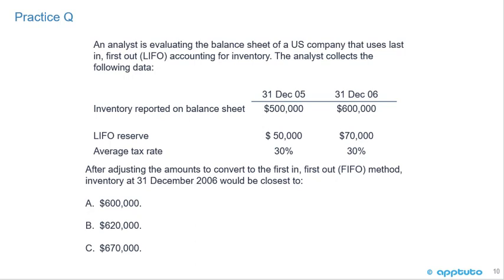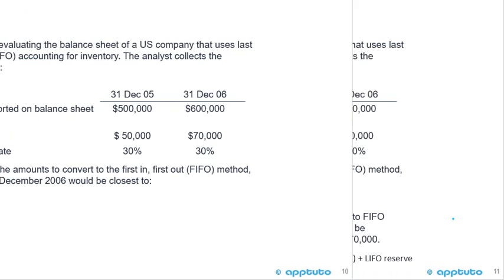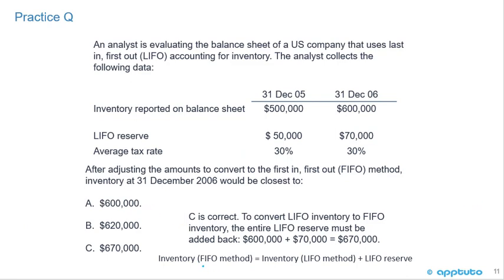One last practice question to end this LOS. An analyst evaluating a US company's balance sheet using LIFO collects this data: inventory reported at end of 2005 is $500,000; end of 2006 is $600,000. The LIFO reserve at end of 2005 is $50,000; at end of 2006 is $70,000. The average tax rate is 30%. After converting to FIFO, inventory at end of December 2006 would be closest to: A) $600,000, B) $620,000, or C) $670,000. The answer is C. Inventory under FIFO equals inventory under LIFO plus the entire reserve — not just the change. So it's $600,000 plus $70,000, which equals $670,000.